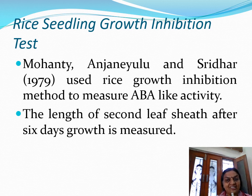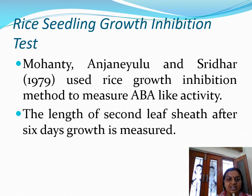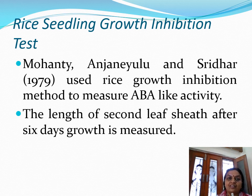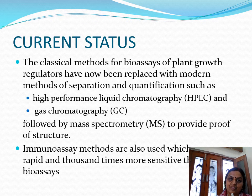Next is the rice seedling growth inhibition test. This was devised by Mohanty, Ajaneoglu, and Sridhar, who used the rice growth inhibition method to measure abscisic acid-like activity. In this case, the length of the second leaf sheath was measured to determine the impact or effect of abscisic acid-like activity.